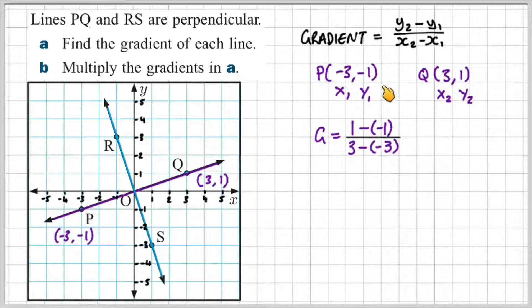So y2 minus y1, which is one minus negative one, and then x2 minus x1, which is three minus negative three. That gives us two over six, which can be simplified to one third. So the gradient of line PQ is one third.